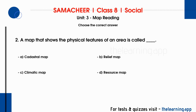Question 2: A map that shows the physical features of an area is called dash. Options are a. Cadastral map, b. Relief map, c. Climatic map, d. Resource map. Correct answer is b. Relief map.